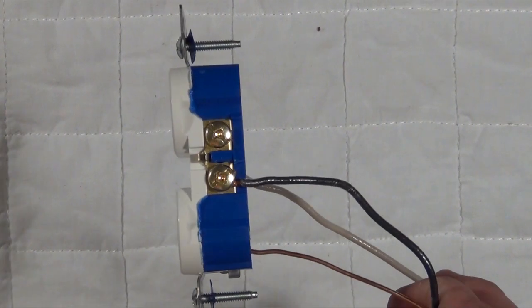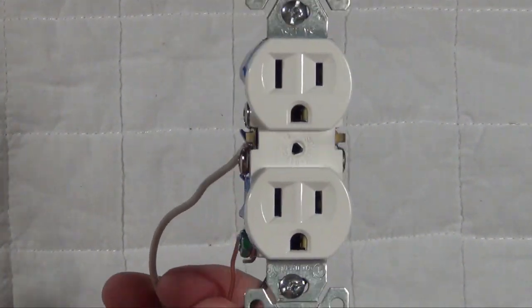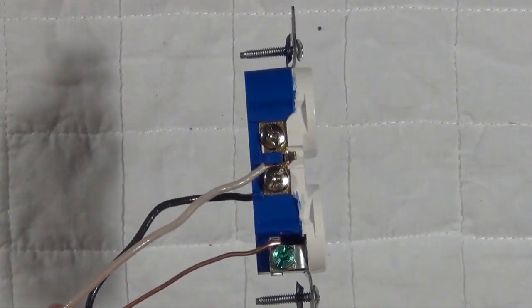And there you have it, a finished outlet. Remember, black goes to brass, white goes to silver, and bare copper ground goes to green.